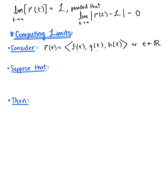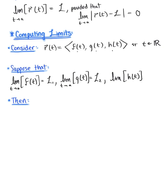Now in order for the limit of the vector-valued function to exist, the limit of each one of these components must exist. So let's suppose that the limit as t approaches a of f(t) equals the component L sub 1, the limit as t approaches a of g(t) equals the component L sub 2, and the limit of h(t) as t approaches a equals L sub 3.